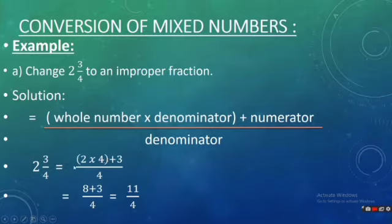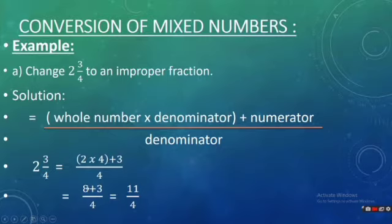The denominator is 4, so we have: 2 multiplied by 4, plus 3, divided by 4. Now 2 times 4 is 8, plus 3 gives us 11, and our answer is 11 by 4. Here 11 is greater than 4, meaning the numerator is greater than the denominator, so it represents an improper fraction.